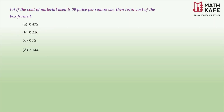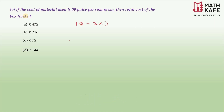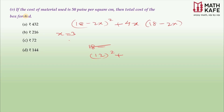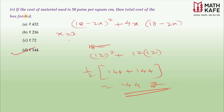The fifth question: if the cost of material is 50 paise per square centimeter, find the total cost of the box. The total area at x = 3 is: base area = (18 − 6)² = 12² = 144, and side area = 4 × 3 × 12 = 144. Total area = 144 + 144 = 288 cm². Multiplying by the cost of 50 paise gives a total cost of 144 rupees. Always read the question carefully before proceeding.